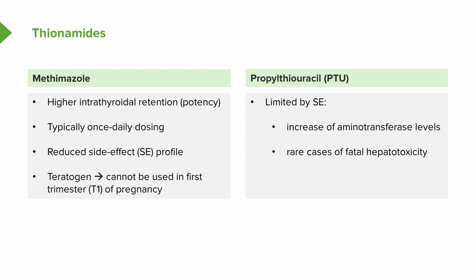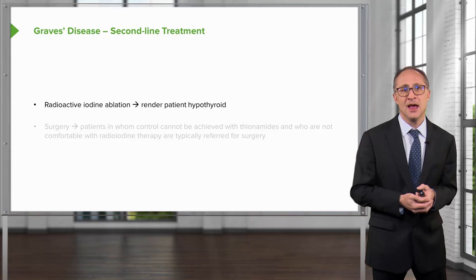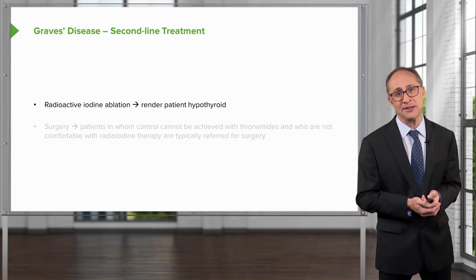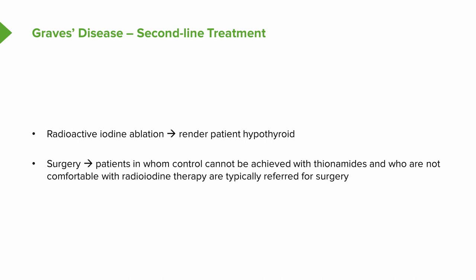Second-line treatment for Graves' disease includes radioactive iodine ablation, which will in most cases render the patient completely hypothyroid. As a consequence, they would then require lifelong thyroid replacement. Finally, surgery is considered in patients in whom control cannot be achieved with drugs and who are not comfortable with radioiodine therapy.